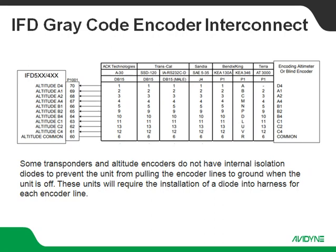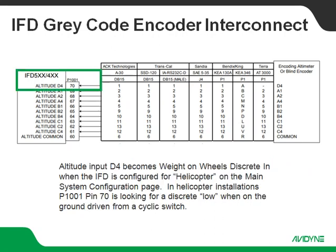The other upside to RS-232, just for what it's worth, is that RS-232 can get you down to 10-foot accuracy on your altitude. Gray code is always going to be 100-foot increments, so maybe you can sell it that way.